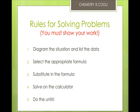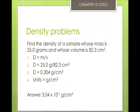When you solve problems, there are very specific rules that you need to follow. Number one, diagram the situation and list the data. Two, select the appropriate formula. Three, substitute in the formula. Four, solve on the calculator. And five, do the units or the sig figs. We're going to find the density of a sample whose mass is 25.0 grams and whose volume is 82.3 centimeters cubed. Density equals mass over volume. We substitute: 25.0 grams divided by 82.3 centimeters cubed, and we get 0.304 grams per centimeter cubed. In standard notation, that's 3.04 times 10 to the negative 1 grams per centimeter squared.